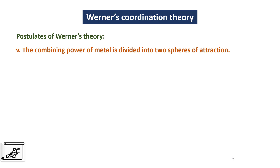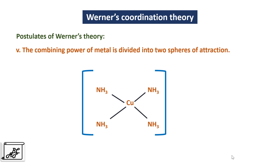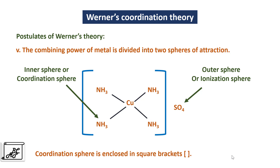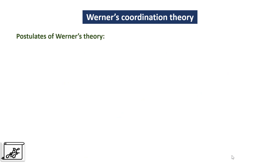The next postulate says that the combining power of the metal is divided into two spheres of attraction. The sulfate ion is called as the outer sphere or ionization sphere, because when it is dissolved in water it gets dissociated. Whereas the ammonia ligand is called as the inner sphere or coordination sphere, which is coordinated to the central metal atom and cannot be ionized when dissolved in water. This coordination sphere is enclosed in square brackets.